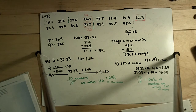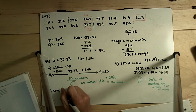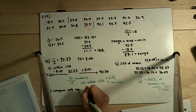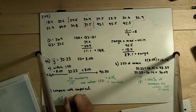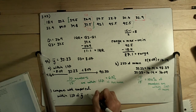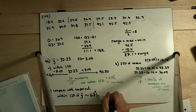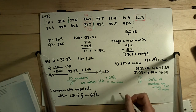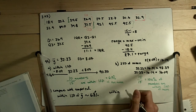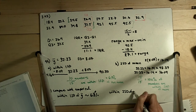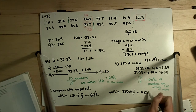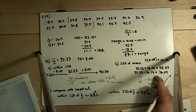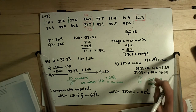Problem 249 asks us to compare with the empirical rule. The empirical rule states that within one standard deviation of the mean we expect about 68%, and what we observed was 67% — so 67 versus 68, which is pretty close. It also states that within two standard deviations of the mean we expect about 95%, and what we observed was 100% of numbers falling within that range.